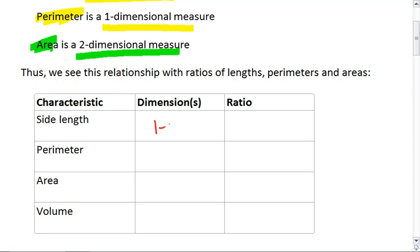So what we see is because side length is 1-dimensional, perimeter is 1-dimensional, but area is 2-dimensional. Then for side length, we'll keep a ratio of a to b. If the ratio of lengths is a to b, then the perimeters are actually also a to b.